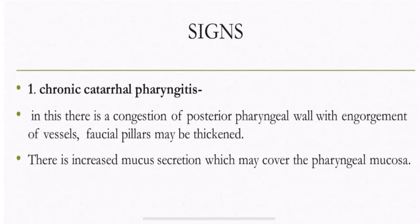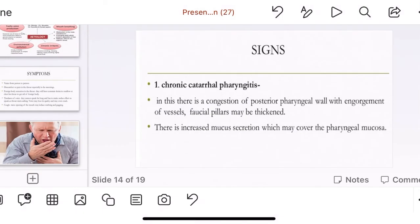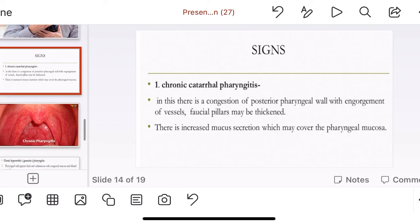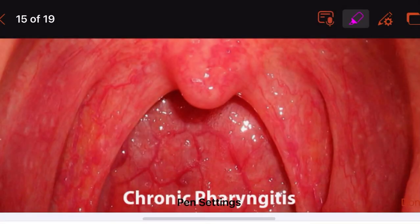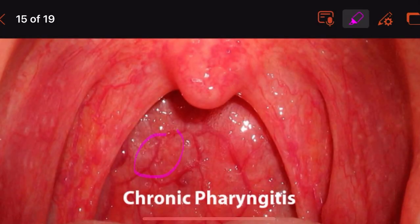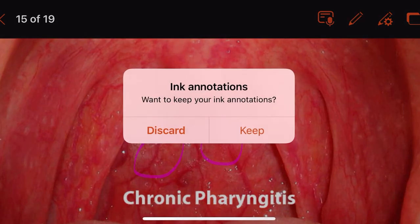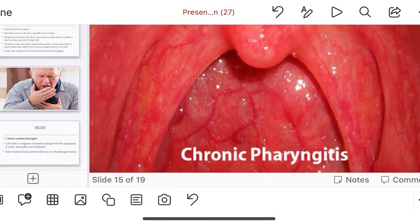Now the signs: in chronic catarrhal pharyngitis, there is congestion of the posterior pharyngeal wall with engorgement of vessels. The faucial pillars may be thickened. You can see in the picture the congestion of the posterior pharyngeal wall and the engorged blood vessels clearly.